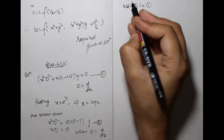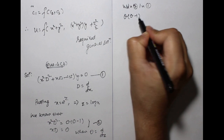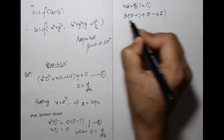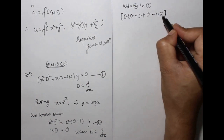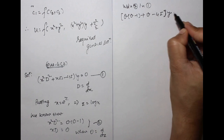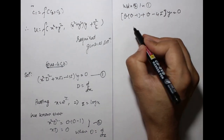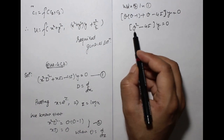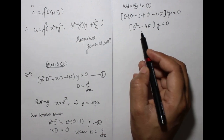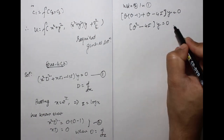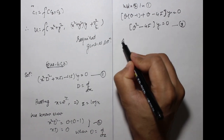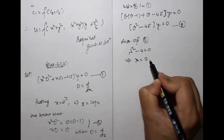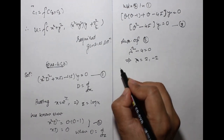Substituting into the equation: θ(θ−1) + θ − 4 = 0, which simplifies to θ² − 4 = 0. This is now a differential equation with constant coefficients. The auxiliary equation gives λ = 2 and λ = −2.